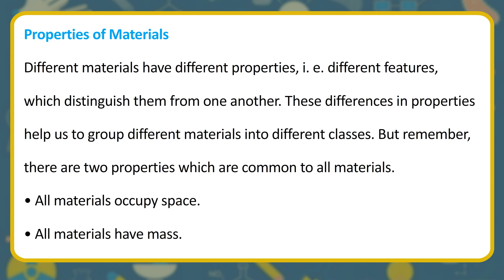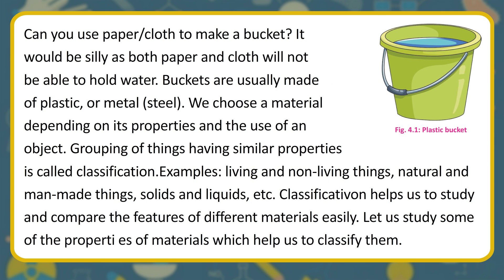Different materials have different properties, i.e. different features, which distinguish them from one another. These differences in properties help us to group different materials into different classes. However, two properties are common to all materials: all materials occupy space, and all materials have mass. We choose a material depending on its properties and the use of an object. Grouping things having similar properties is called classification.